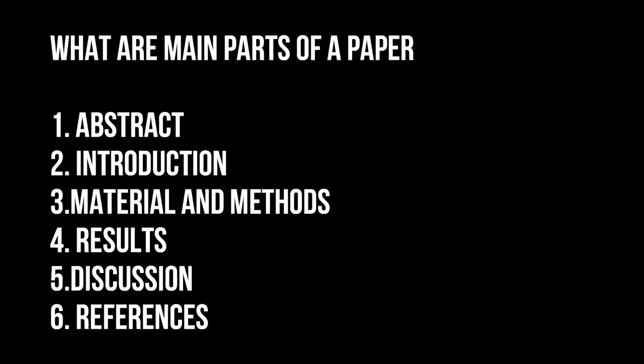Hello guys, good morning. In this video we will be talking about what are the main parts of a SCI article and how we should write a SCI paper. Usually there are six main parts of a paper: abstract, introduction, material and method, results, discussion, and references. Here we will be talking about them one by one.